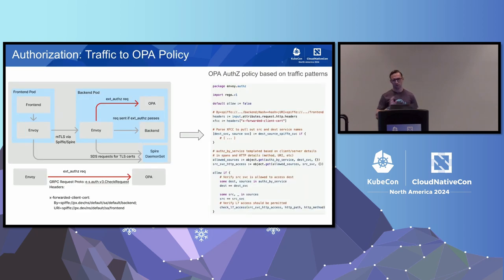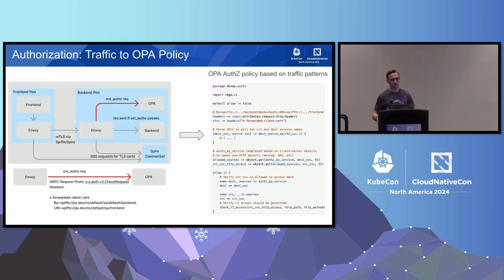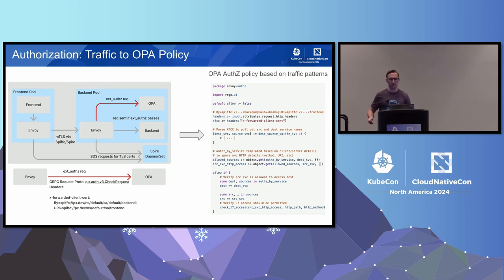Going from this to what our OPA policy will look like, we have our SPIFFE XFCC header, and we have to parse that and turn it into destination and source services. The data that we get from Pixie is going to template a bunch of dictionaries and other variables that we will then use against that XFCC header. Ultimately, we will check not only that the source and destination service should talk to each other, but also if their HTTP path, prefix, and method match.